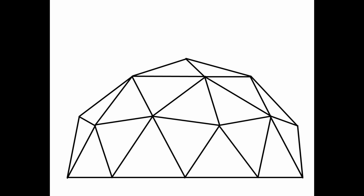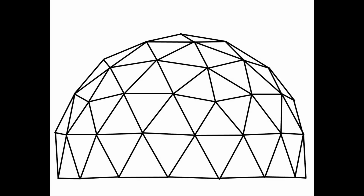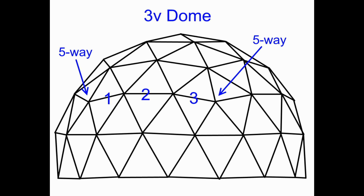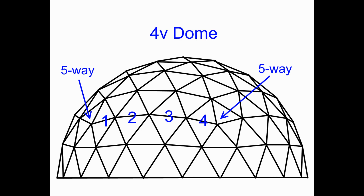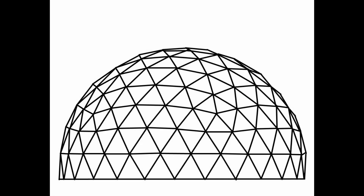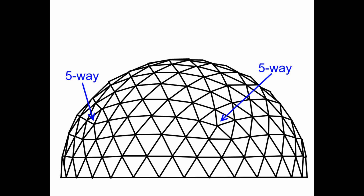Here are some examples of how to use this technique. Find the first 5-way connection on the left, then on the right, then count the number of struts — which tells us this is a 2 frequency dome. Look closely at this dome and find the 5-way connection: here is one, here is another — 1, 2, 3 — a 3 frequency dome. A 4 frequency dome. A 5 frequency dome. Here is a 6 frequency dome.